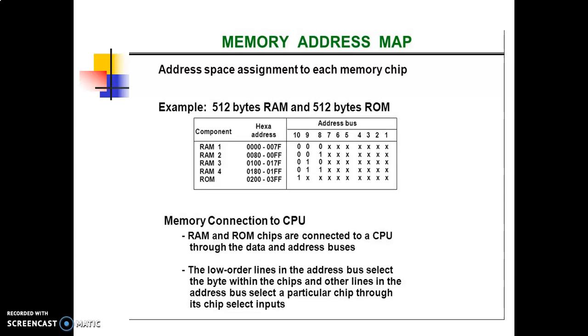The component column specifies whether a RAM or ROM chip is used, and the hexadecimal address column assigns a range of hexadecimal equivalent addresses for each chip. The address bus lines are listed in the third column. Although there are 16 lines in the address bus, the table shows only 10 lines because the other six are not used in this example and are assumed to be zero.